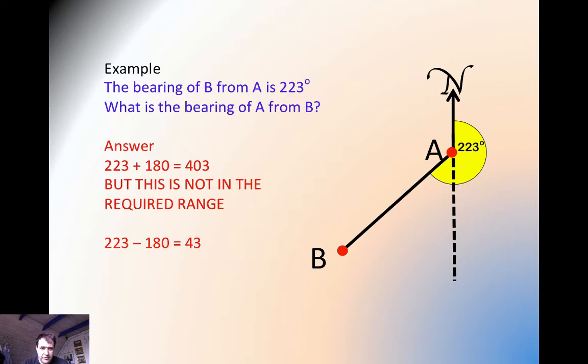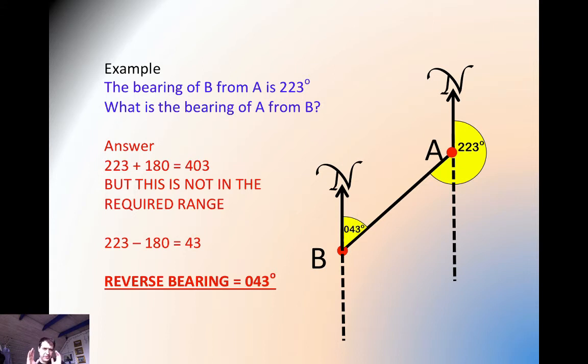So the required bearing is not 43 but 043. The reason it's 043, just imagine how these things were communicated in the old days over radio. You get interference, so if you hear over the radio 43, you don't know whether that was 143 or 243 or 343 or in this case 043.